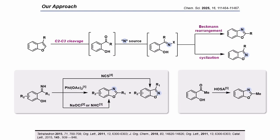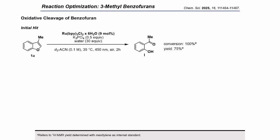Multiple methods are known to access benzoxazols or benzisoxazols from imines; however, most are very substrate-dependent with varying product ratios. Our aim was to achieve a broadly applicable method which, depending on the formed intermediate, would undergo a Beckmann rearrangement to access benzoxazols or direct cyclization to the corresponding benzisoxazols. We started our optimization with the oxidative cleavage of the C2-C3 bond of benzofurin using 3-methylbenzofurin as our model substrate. We were pleased to see that a ruthenium catalyst in the presence of oxygen gave us the cleaved product in 75% yield.